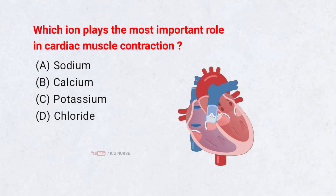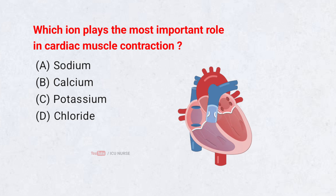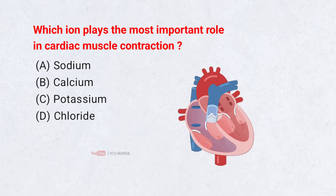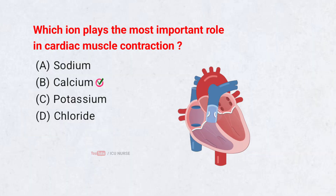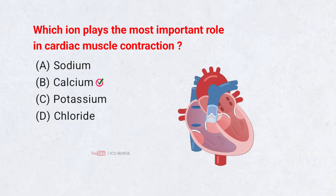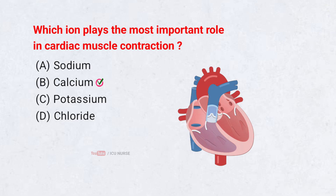Which ion plays the most important role in cardiac muscle contraction? Correct answer B: Calcium. The calcium ion plays the most important role in cardiac muscle contraction.